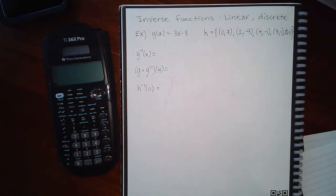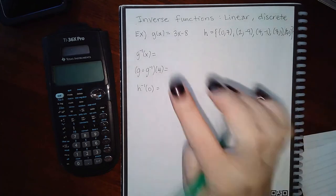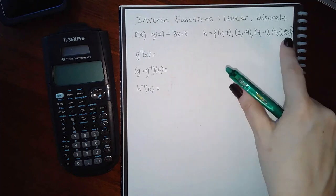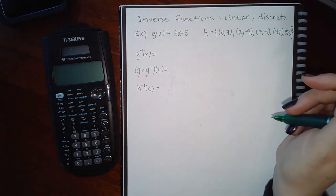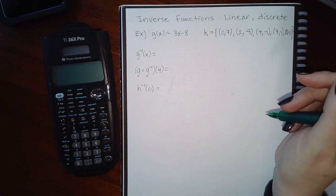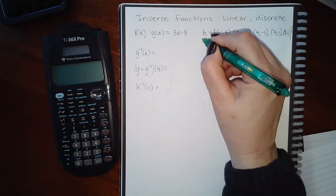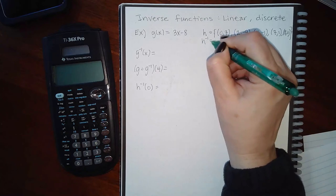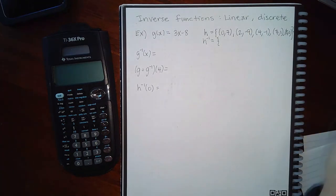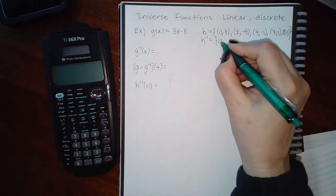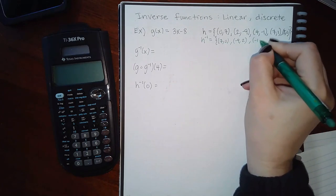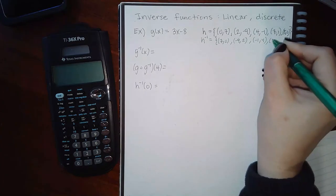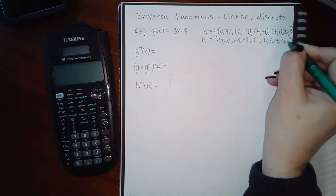Now we find the inverses of linear and discrete functions. For the discrete function h, finding the inverse is easiest — you literally just interchange the x's and y's in each point. So the inverse points become: (7, 0), (−9, 2), (−1, 4), (1, 7), and (0, 8).